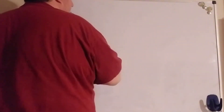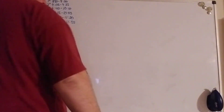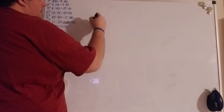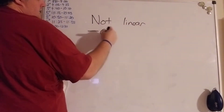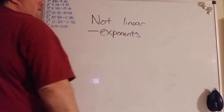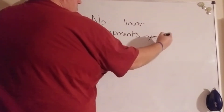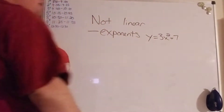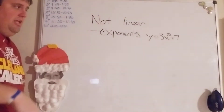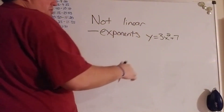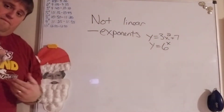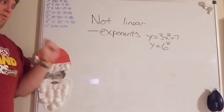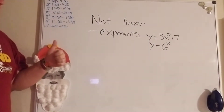There are a couple of things to look out for to tell if an equation is linear or not. The first is exponents. If we have a variable with an exponent on it — like y = 3x² + 7 — or if the exponent itself is a variable — like y = 6^x — any of those cases where a variable has an exponent or an exponent is a variable will make the equation not linear.